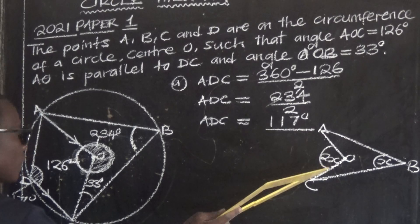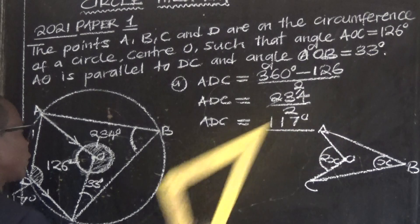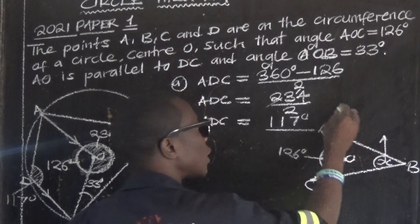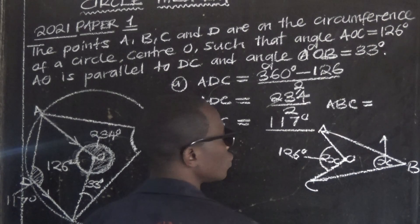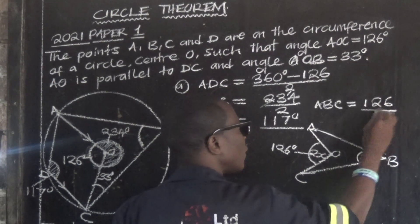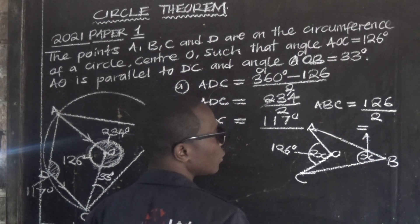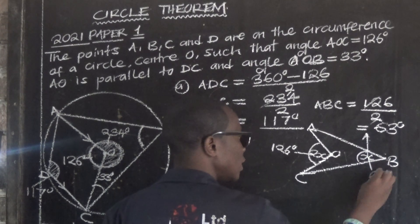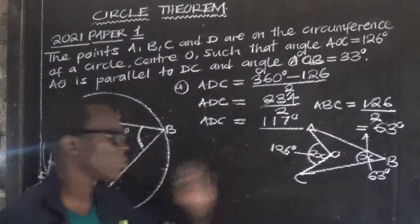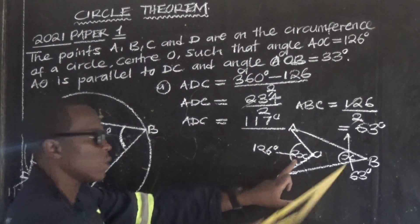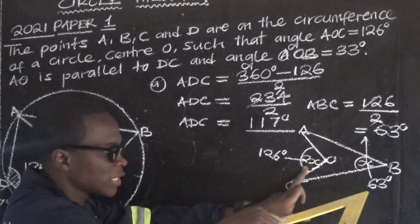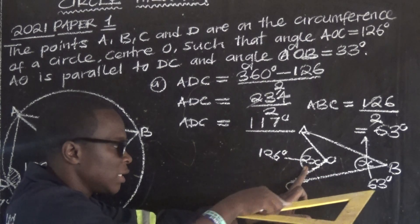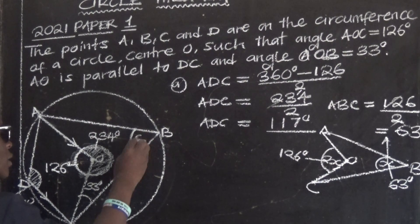In our case, the angle at the center is 126. So if you want to find the angle at the circumference, you divide by 2. Since angle AOC is 126, angle ABC equals 126 divided by 2 equals 63 degrees.